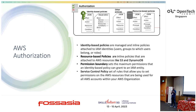By default, there is a permission boundary. If you are given a permission, you can at maximum give permissions within your department. If you give permissions beyond your department, AWS will block it.